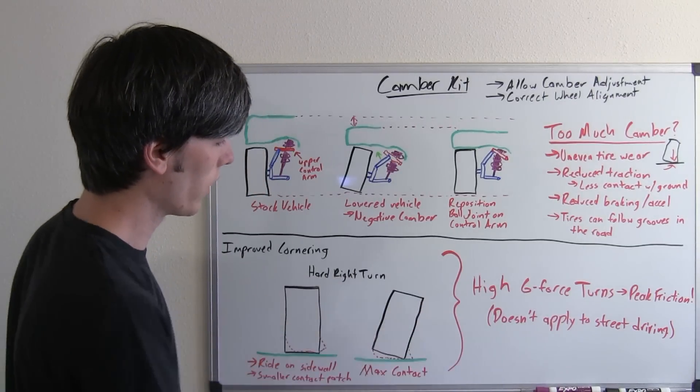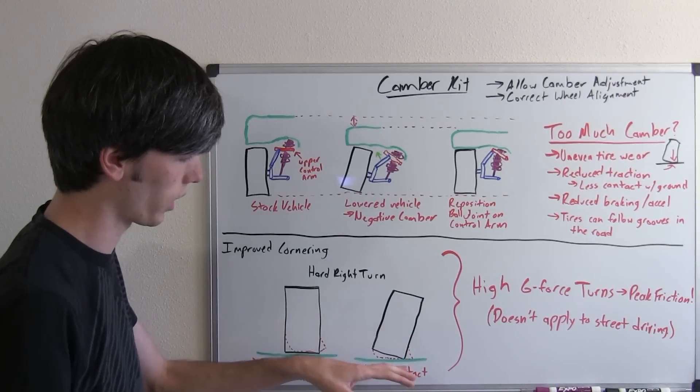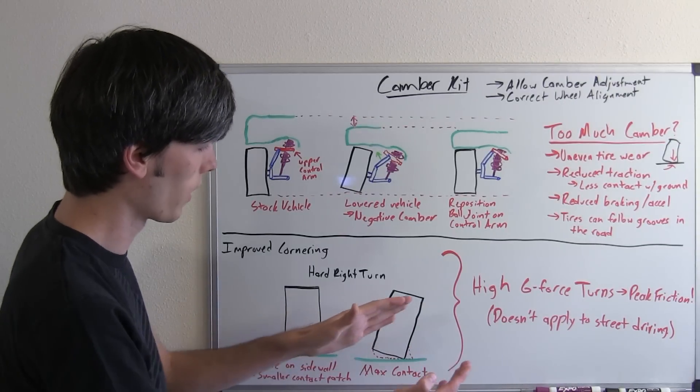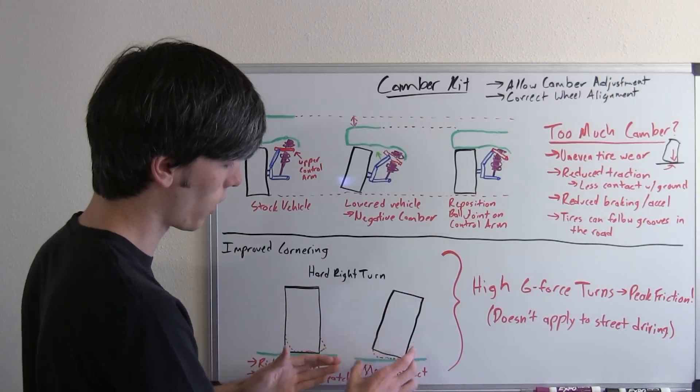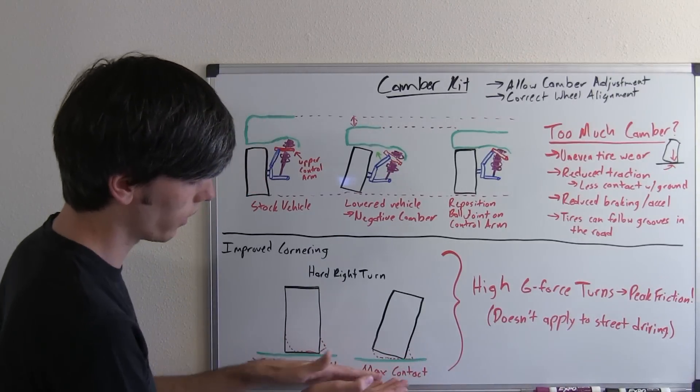So if you have negative camber, and this is slightly exaggerated, but it's just illustrating a point. If you have this negative camber and you throw it into a hard right turn, as that tire deforms, it actually evens out the contact patch perfectly with the ground.